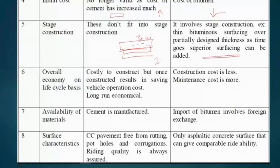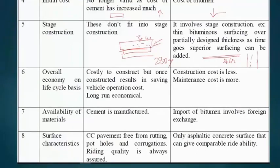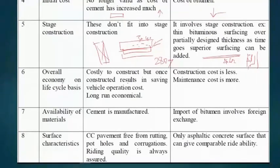Rigid pavement requires a curing period of 28 days, while flexible pavement can be opened to traffic within 24 hours. Flexible pavement allows alternative lane construction — one lane can be closed for construction while traffic flows on the other. Rigid pavement requires complete closure of the entire pavement for the full 28-day curing period.